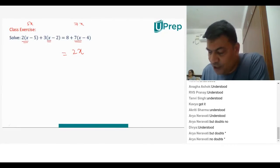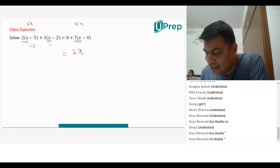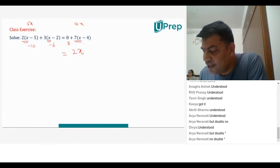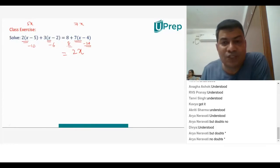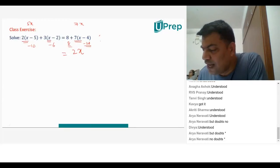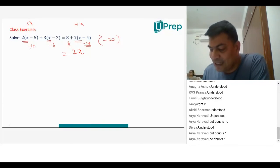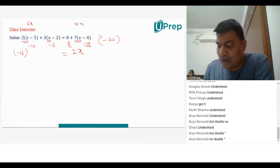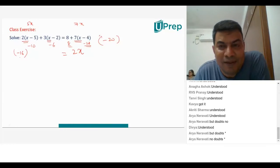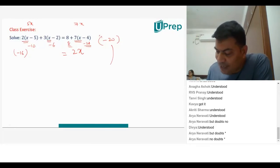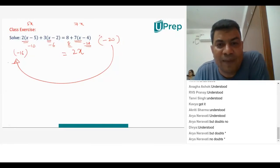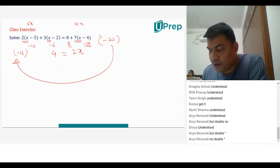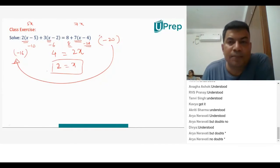Now let's do the constants. 2 into minus 5 is minus 10; 3 into minus 2 is minus 6; 7 into minus 4 is minus 28. So you have minus 28 and plus 8 on the right-hand side, giving minus 20. On the left-hand side, you have minus 10 and minus 6, so that will be minus 16. So I transpose minus 20 on the left-hand side — it will become plus 20. So 20 minus 16 will be 4. So 4 is equal to 2x, therefore x is equal to 2.